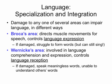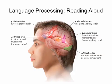Wernicke's area handles language comprehension and expression. If it's damaged, people might speak meaningless words, or they're unable to understand something that somebody else says or something that they've read.